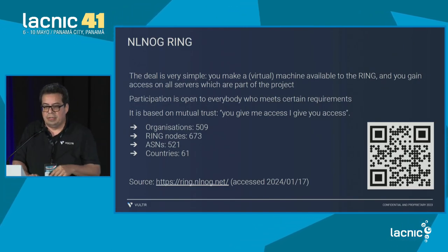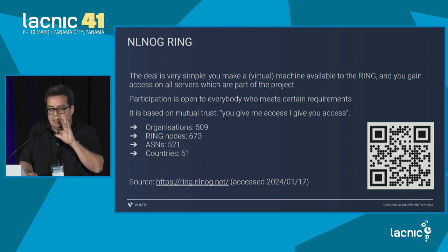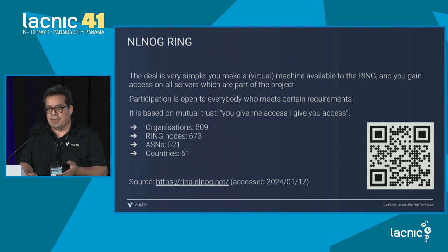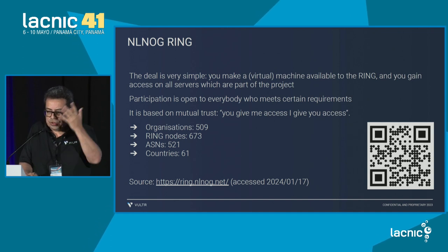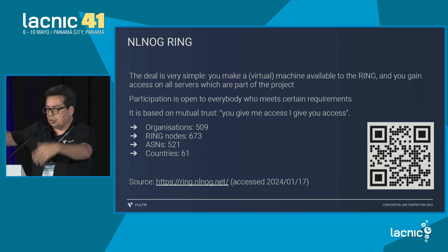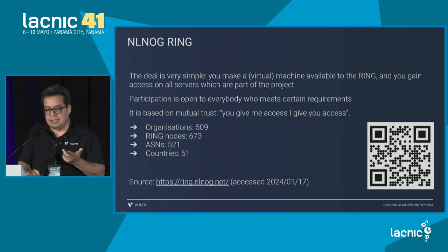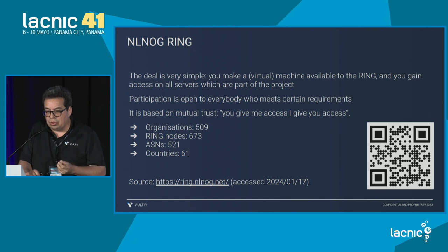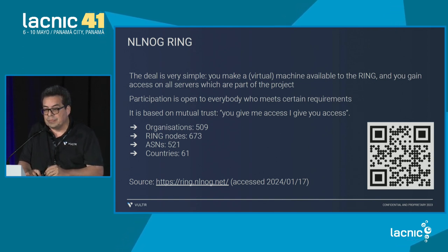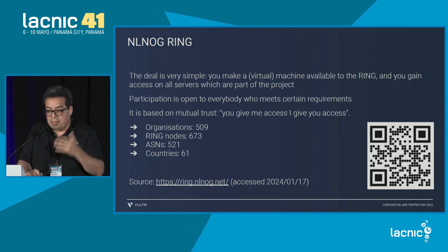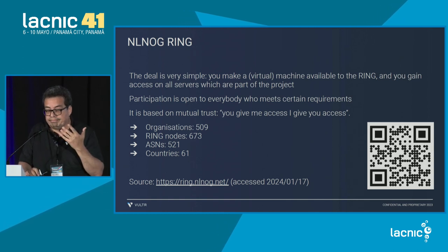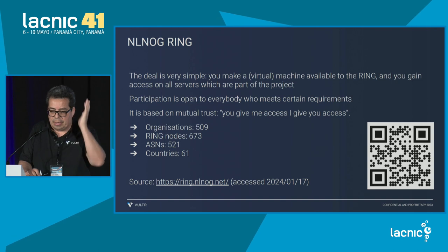What is Ring? What Ring proposes is very simple: you provide a virtual machine behind your autonomous system. It has to meet a number of requirements, and they allow you to access all the virtual machines they have. I realized they had 673 nodes, 521 autonomous systems, and 61 countries. That was precisely what I was looking for — I wouldn't have to call anyone because I can access these machines with SSH keys.